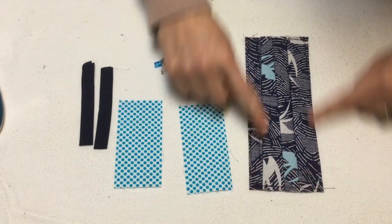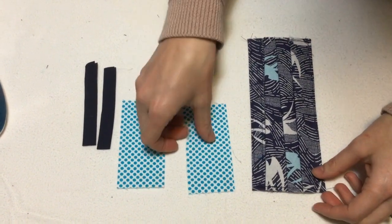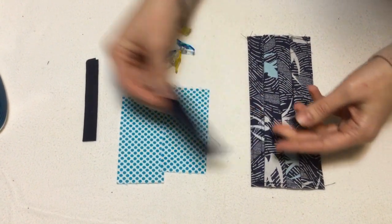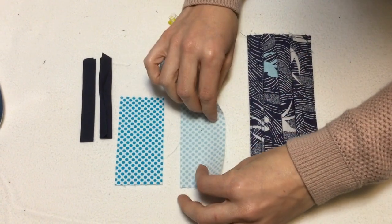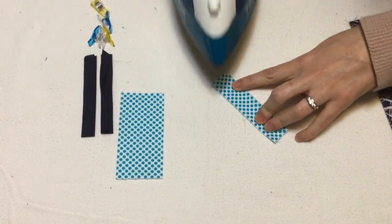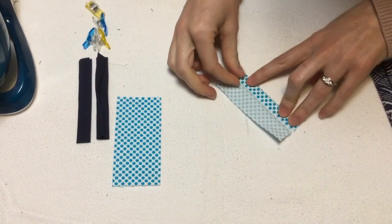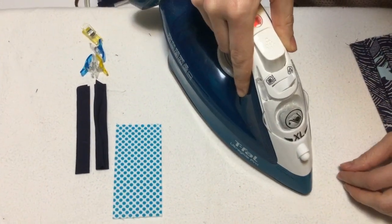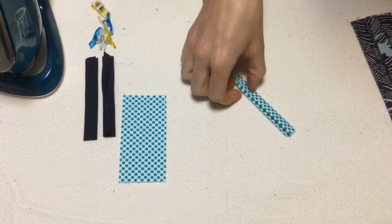Now we'll apply binding to the edges of the mask in order to make a sleeve that you can slip the strap through. For this step you can either use four inch lengths of pre-made bias binding, or you can make your own binding. I'm going to press it in half and press those halves into the center. There's our binding.